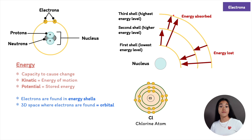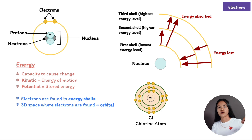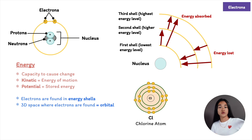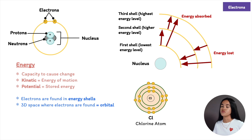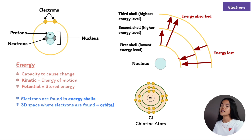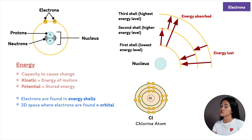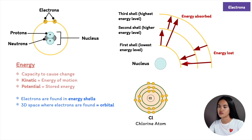Think of it like a staircase where the floor is the nucleus. The farther you are from the floor, the greater your potential energy. On the first step you have lower energy compared to being at the top of the staircase. An electron can move from one shell to another, and as it moves it either absorbs or loses energy. The amount of energy gained or lost equals the difference in potential energy between its old shell and new shell. When an electron absorbs energy, it moves to a shell farther out; when it loses energy, it falls back to a shell closer to the nucleus.